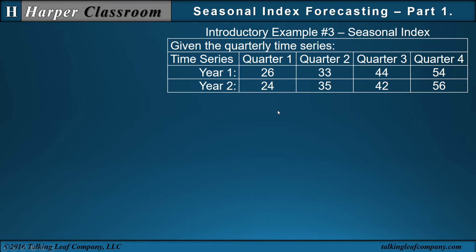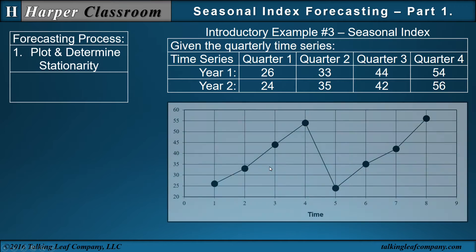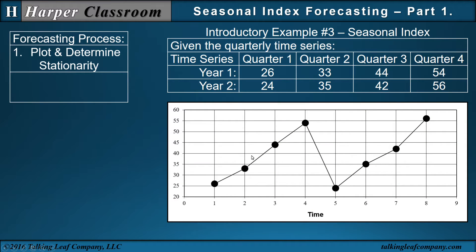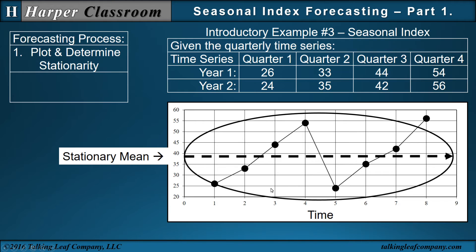Let's start with two years of quarterly data. Step one is to plot and determine stationarity. So if we plot the data, the stationarity really is around the stationary mean. We can see that it increases in the first year — four quarters is a year — and in the second year it increases, but it doesn't keep increasing. It comes down and repeats, so the overall nature is stationary.